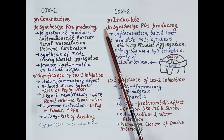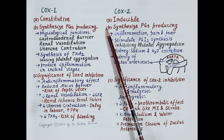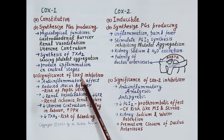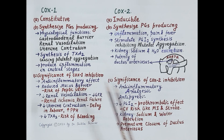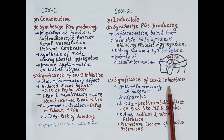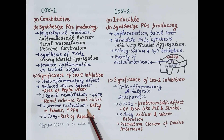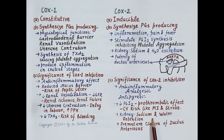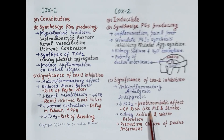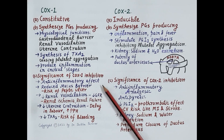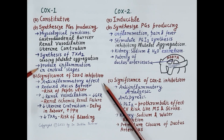We should now discuss what happens if COX-1 is inhibited or what happens if COX-2 is inhibited — understanding the desirable as well as undesirable effects of COX-1 and COX-2 inhibition. Let's first talk about the significance of COX-1 inhibition.